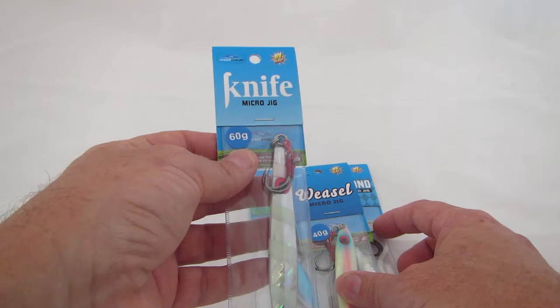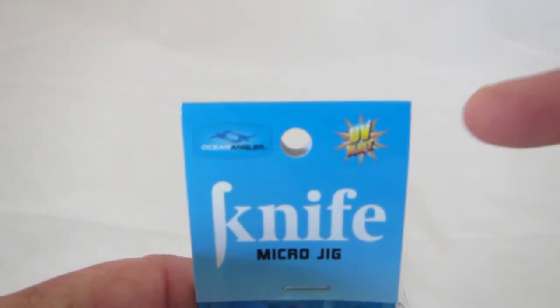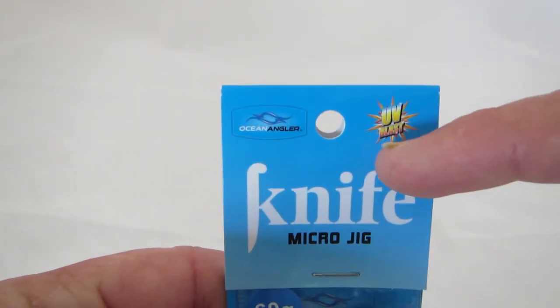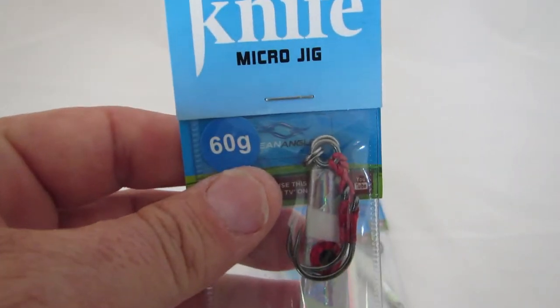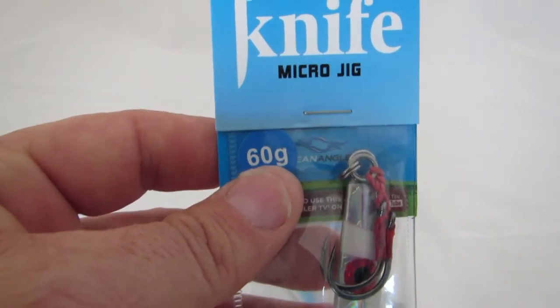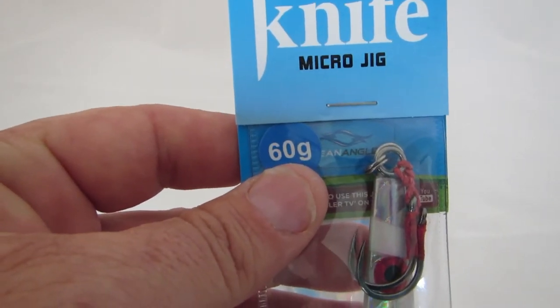First thing you're going to notice on all the Ocean Angler microjigs is the UV blast symbol, so they've all got a UV reflective silicate on them which makes them more visible to fish.